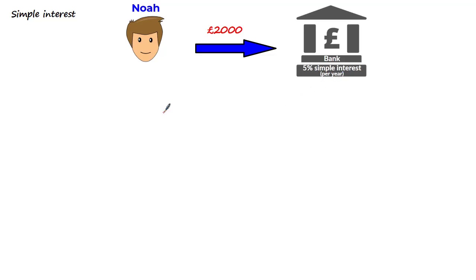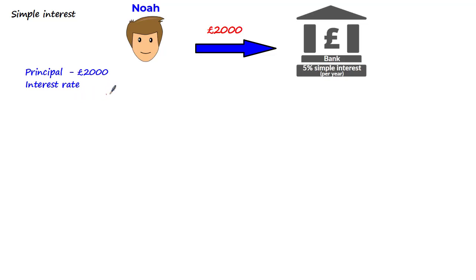A couple of useful keywords for you to learn are: 'principal,' which is the original amount invested — in Noah's case, the principal would be the £2,000 he invested — and 'interest rate,' which is the rate at which Noah earns interest on top of his investment. In this case, it's the interest rate paid by the bank of 5%, and the interest rate is usually given as a percentage.